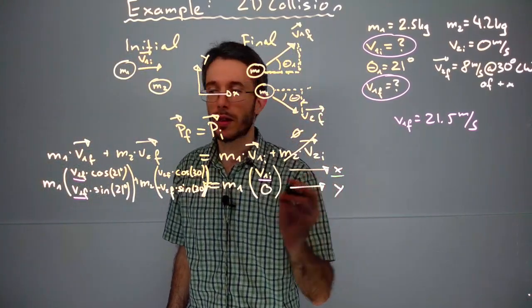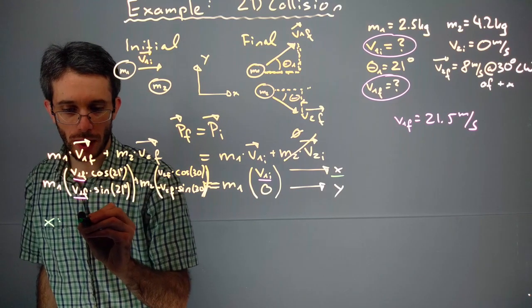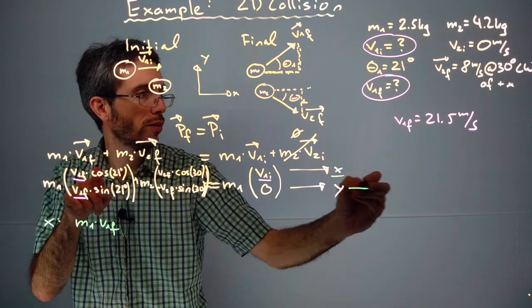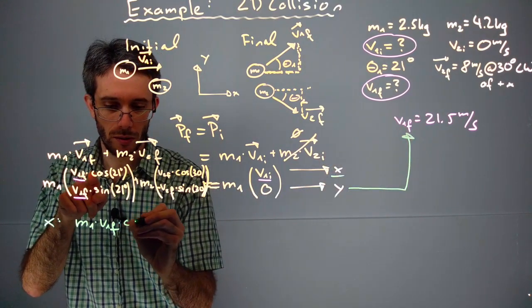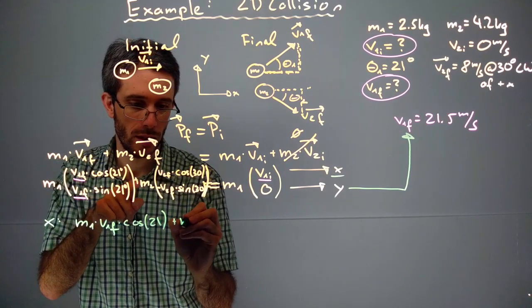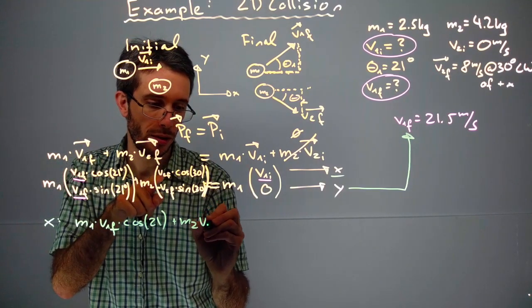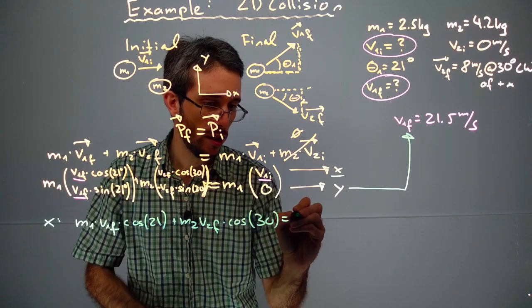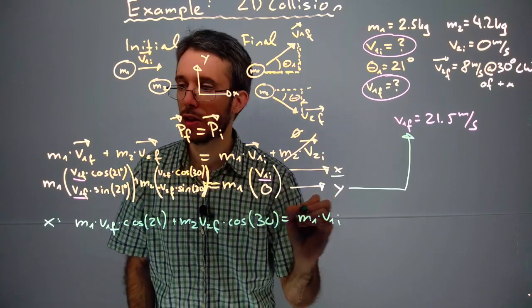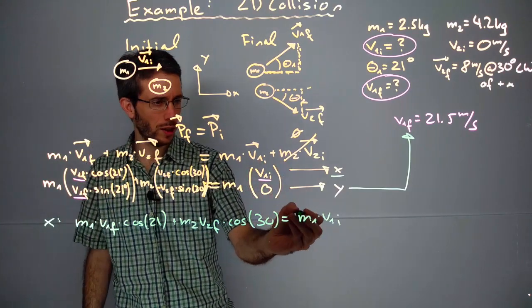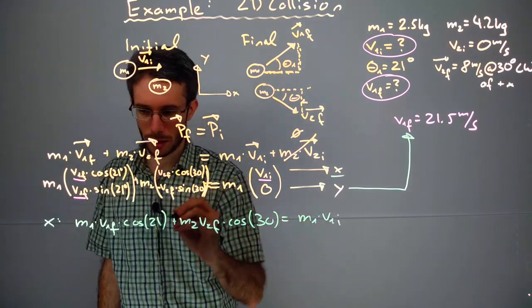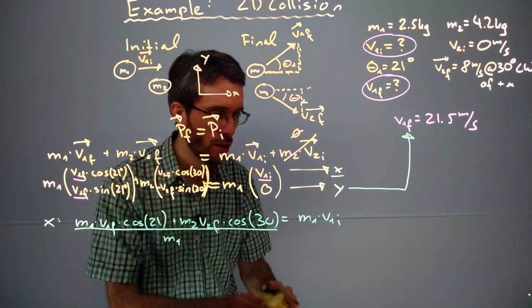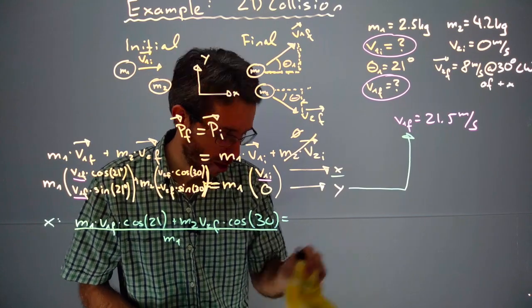So in x direction, I have m1 times v1 final, which I found from the y direction, times cosine 21 plus m2 v2 final times cosine 30 equals m1 times v1 initial. This is very simple.